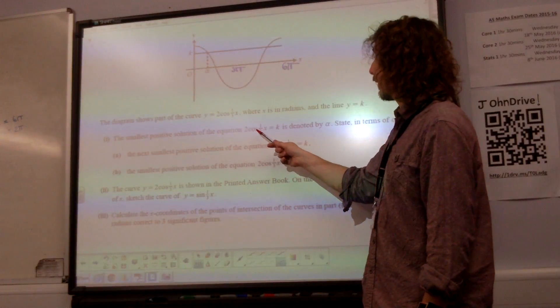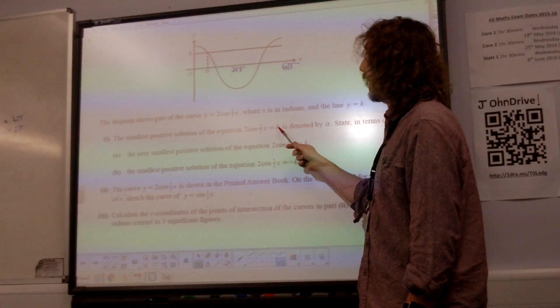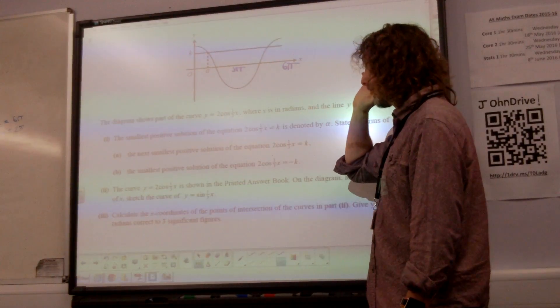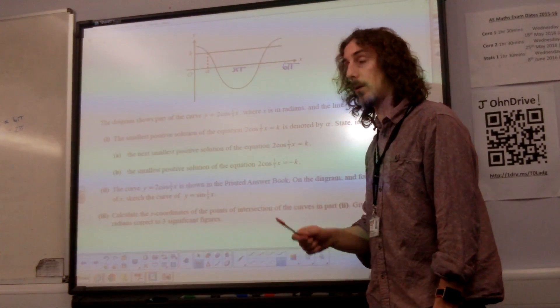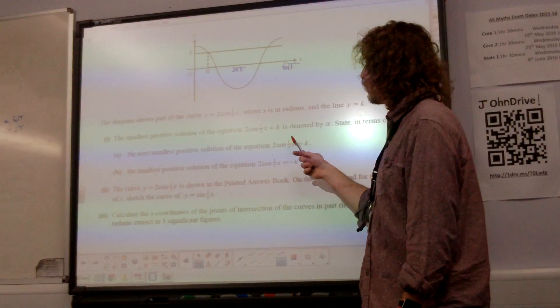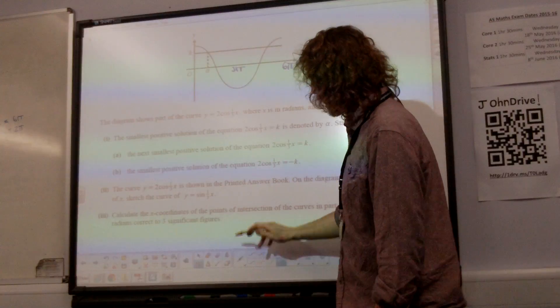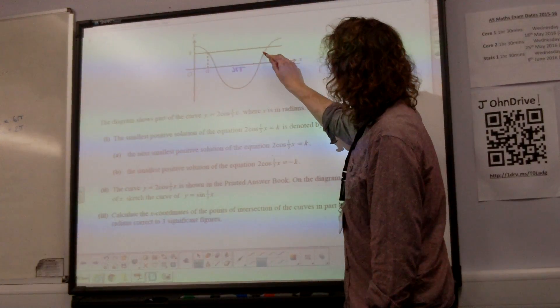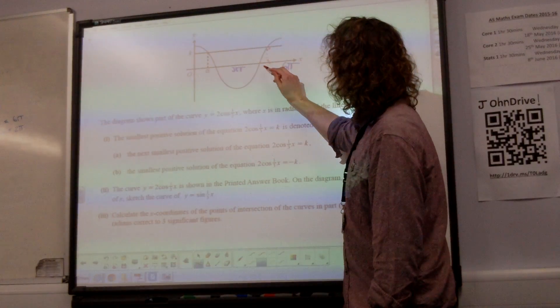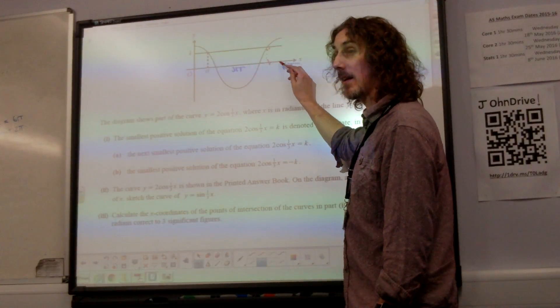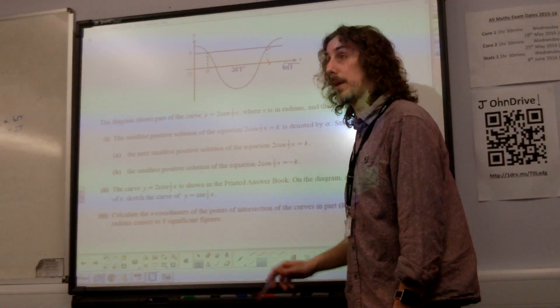The smallest positive solution of the equation 2 cos third x equals k is denoted by alpha. Find the next smallest positive solution of the equation 2 cos third x equals k. That's where the line hits the curve again. So that is that point down there. And that distance there must also be alpha, because it's symmetrical.